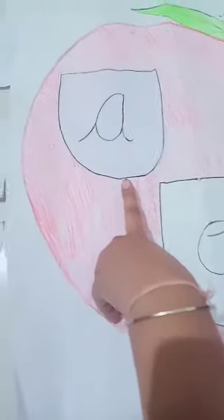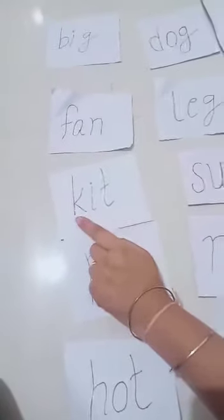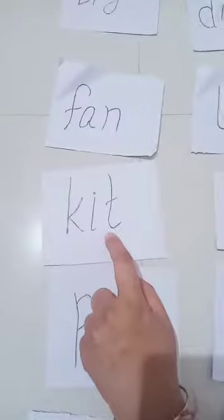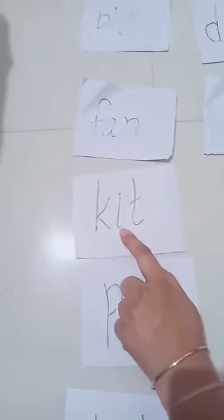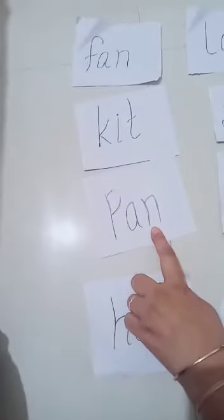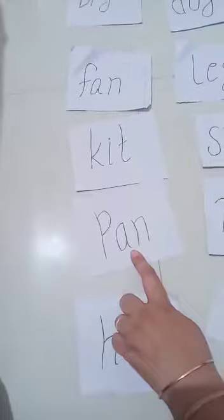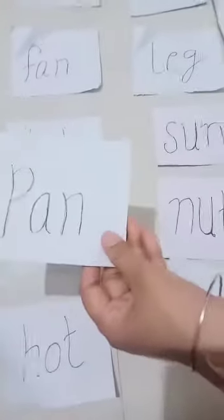Okay, the first vowel sound is A. So let's find a word with the A sound. Eater, kid — is it an A sound? No. Pan — yes, it is an A sound! Good. So take the word and keep it inside the pocket of the A sound.